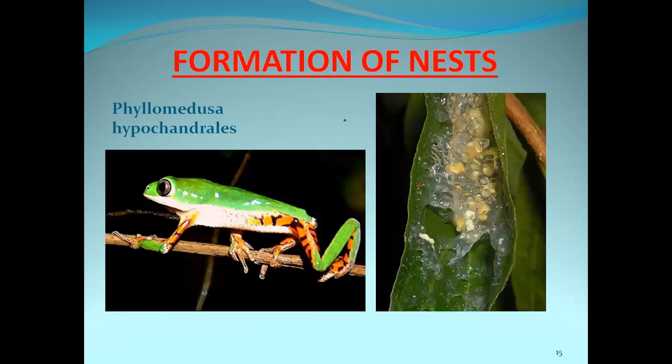The next example under the formation of nest category is Phyllomedusa hypochondrialis. This organism also lays eggs on plants and the eggs are glued to the plant leaves. Once the eggs are developed, the hatched larvae enter into the nearby water body.